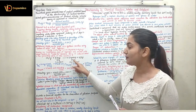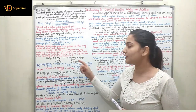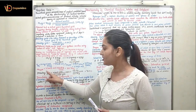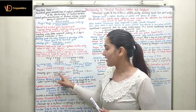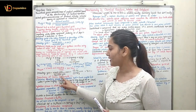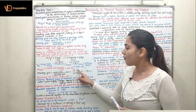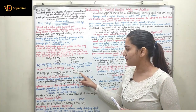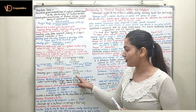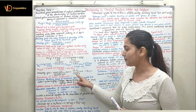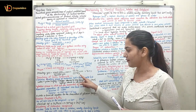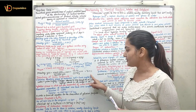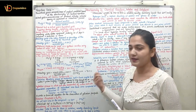The amount of methanol actually produced, accounting for losses, is 102 grams. Percentage yield = (actual yield / theoretical yield) × 100 = (102.0 g / 105.78 g) × 100 = 96.4%.